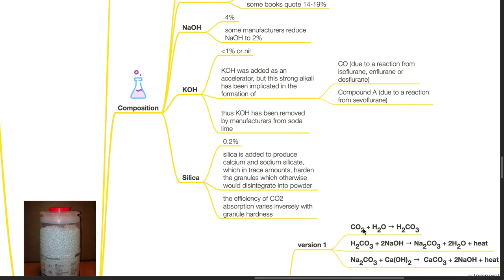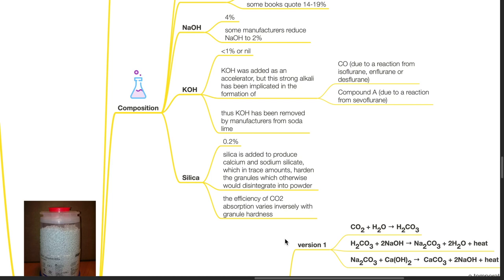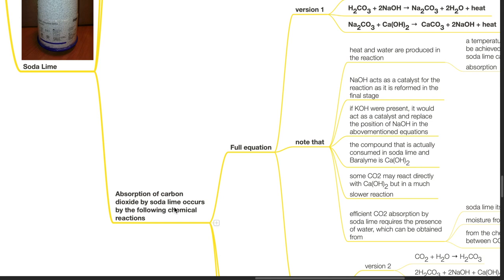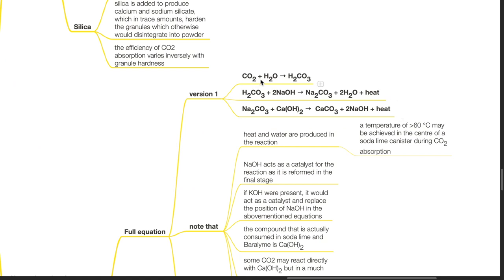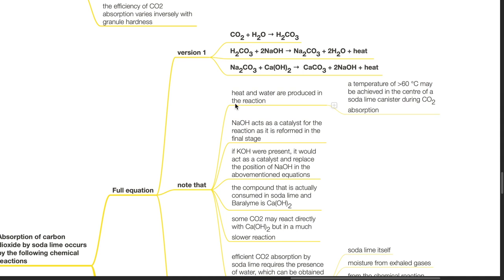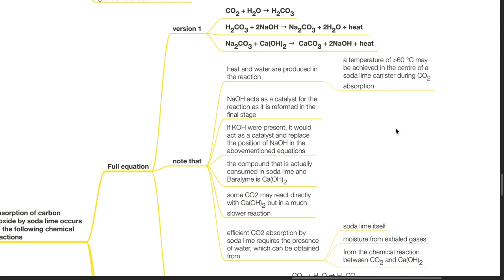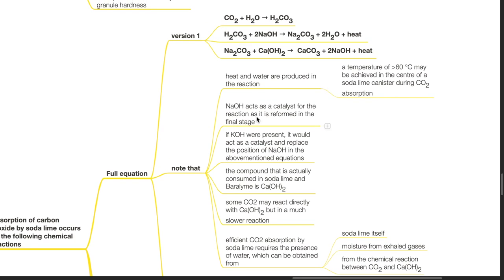The efficiency of CO2 absorption varies inversely with granule hardness. Absorption of carbon dioxide by soda lime occurs by the following chemical reactions: CO2 + H2O → H2CO3; H2CO3 + 2NaOH → Na2CO3 + 2H2O + heat; Na2CO3 + Ca(OH)2 → CaCO3 + 2NaOH + heat. Note that heat and water are produced in the reaction. A temperature of 60°C or more may be achieved in the centre of a soda lime canister during CO2 absorption. Sodium hydroxide acts as a catalyst for the reaction as it is reformed in the final stage.